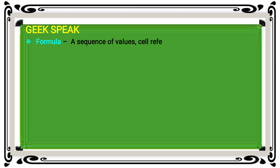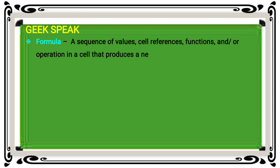In this first topic, a formula is a sequence of values, cell references, functions, and operations in a cell that produces a new value from existing values. When you use new values, you use the sequence of methods in a formula.